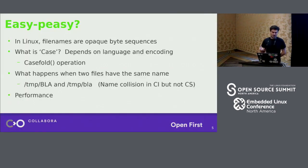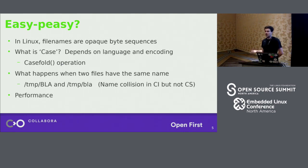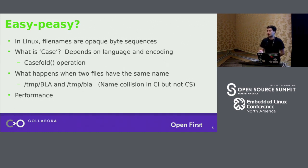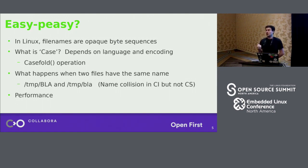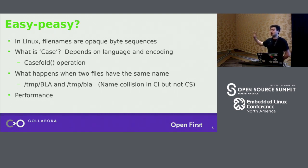Basically, how do we implement that? That's easy, right? For those who program, you have your libc strcasecmp, and that solves everything. It's not exactly like that. In Linux, file systems see file names as opaque byte sequences - it's just a stream of bytes that is not null-terminated. It can be any byte possible except for the forward slash and the null byte character. What is the uppercase of a byte? It doesn't make sense. Upper and lower case are linguistic terms, so they only make sense when you define a language and define an encoding for your language.